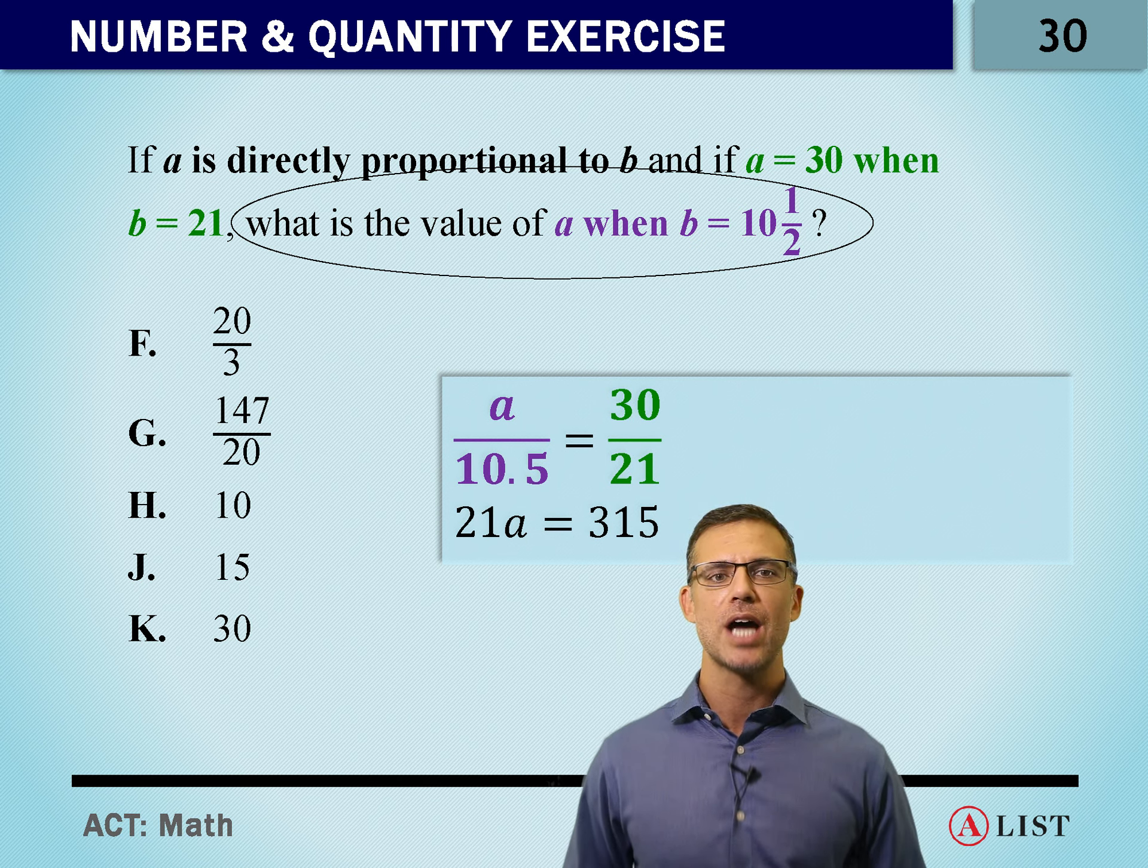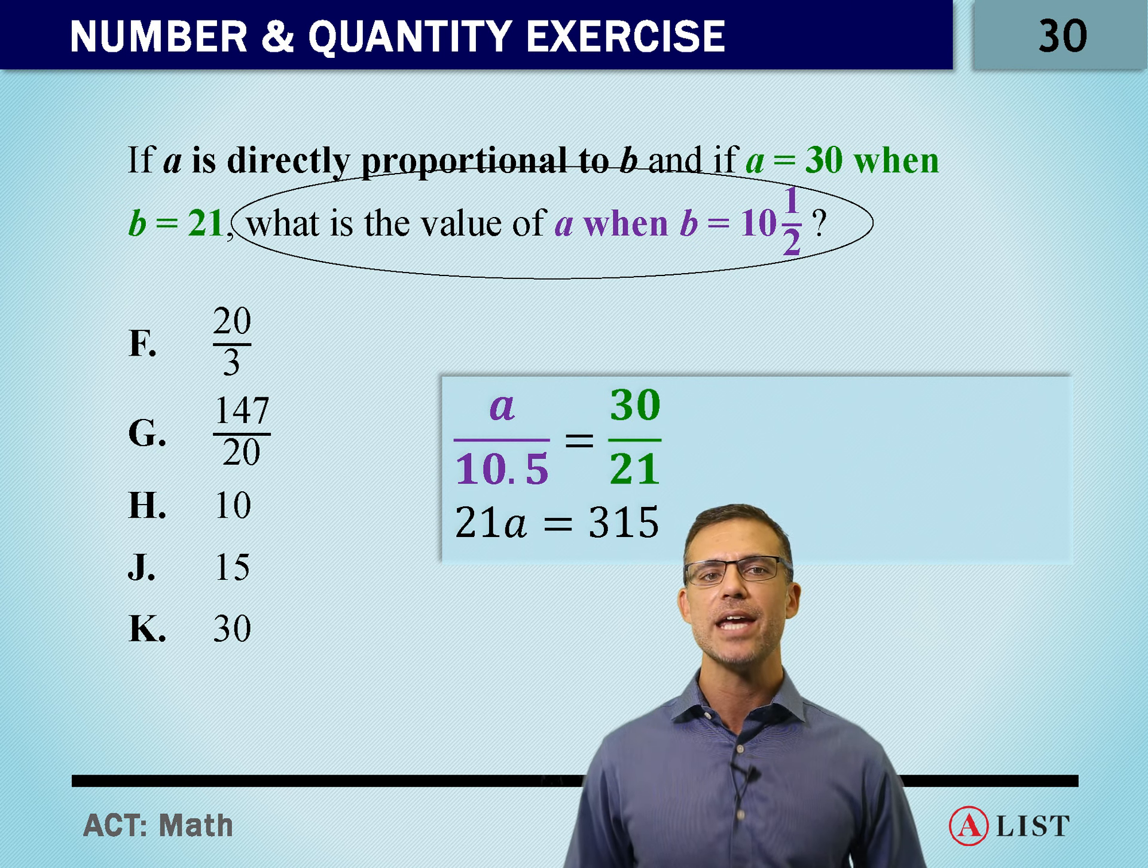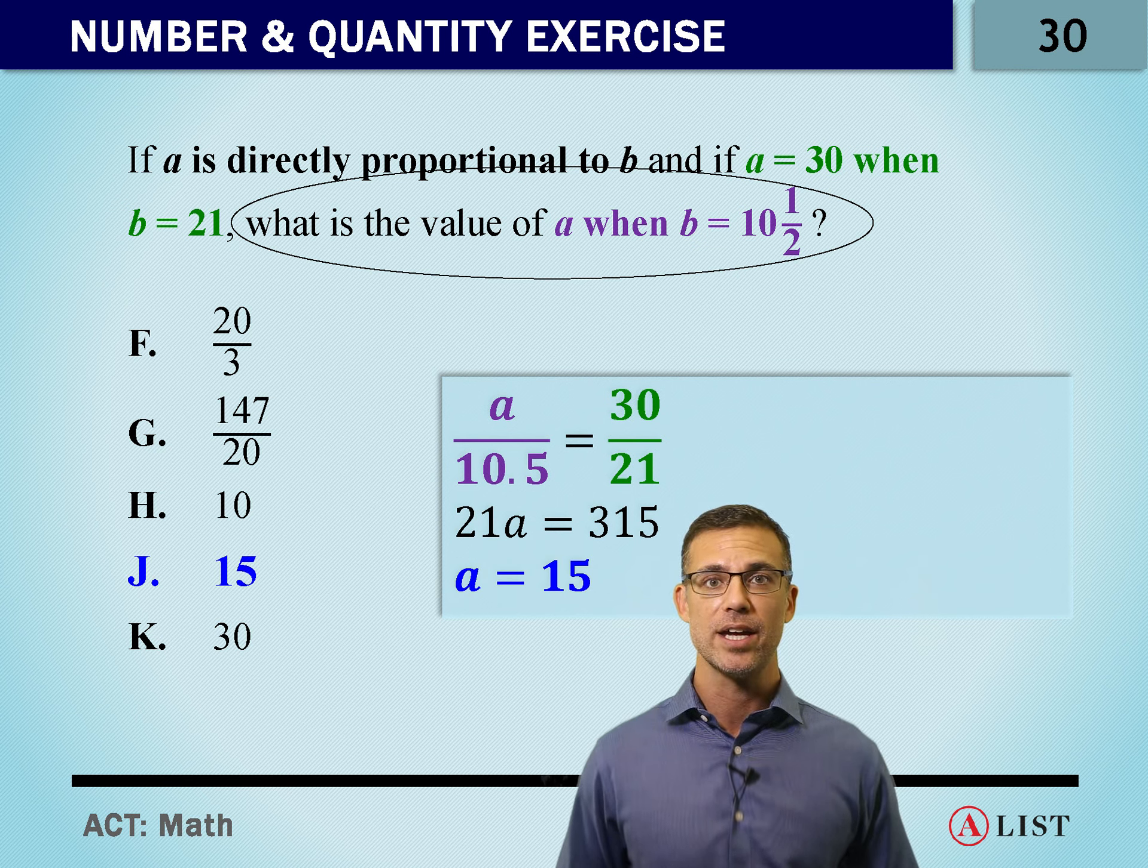Using our algebra, we divide both sides by 21, and A equals 15. So what's our answer? J, 15.